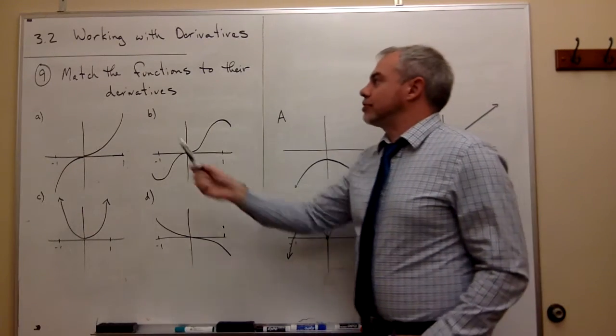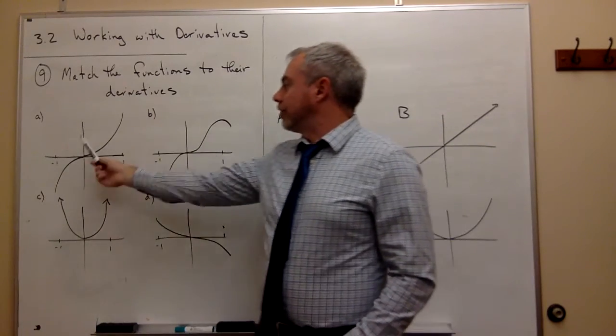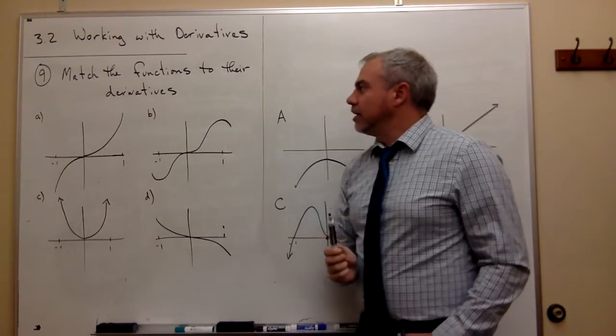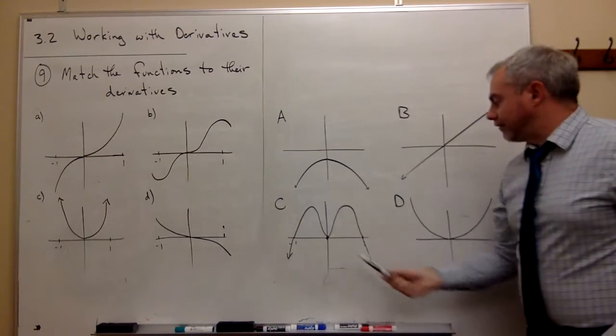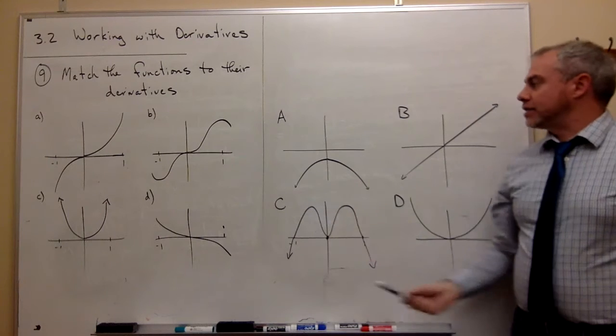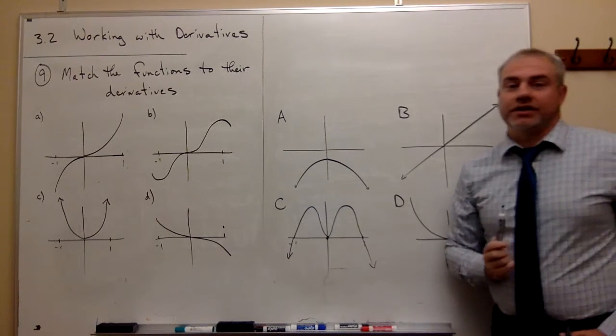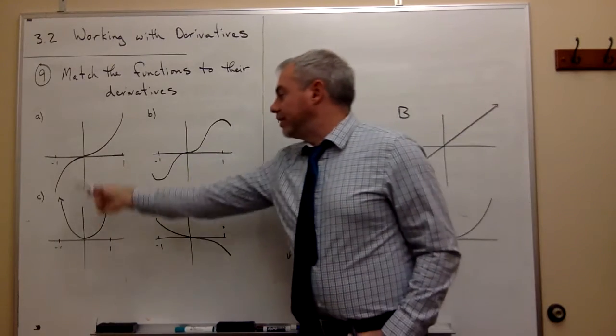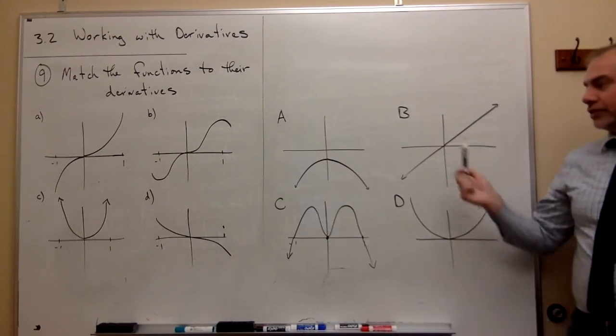In problem nine, we're trying to match the functions that are on this half of the board. There are four functions listed, and we want to match the functions up with the graphs of their derivatives. So here are four graphs on this side. These represent four derivative functions, and we'd like to know if this is what the original functions look like, then what do their derivative functions look like?